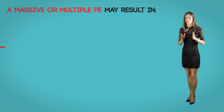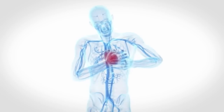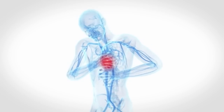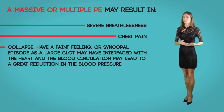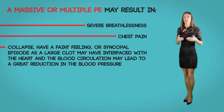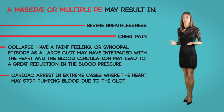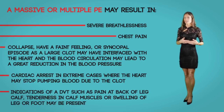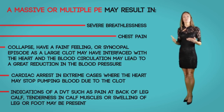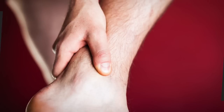With a massive or multiple PEs, signs and symptoms could be severe breathlessness, chest pain felt in the center of the chest behind the breastbone, feeling faint, a syncope episode, or even collapse. A large clot may interfere with the heart and blood circulation, leading to a great reduction in blood pressure, and cardiac arrest in extreme cases. Indications of DVT may also be present, such as pain at the back of the calf, tenderness, muscle swelling of the leg or foot, and the calf may turn warm and red.